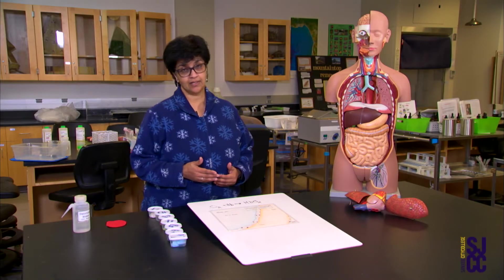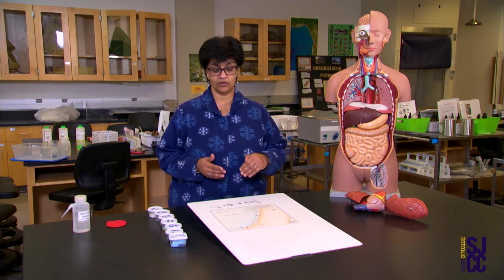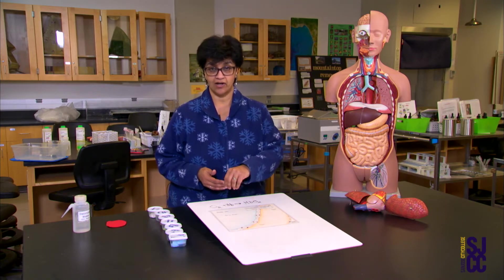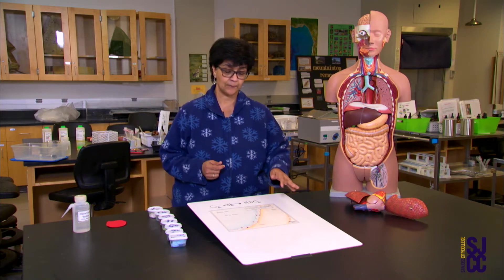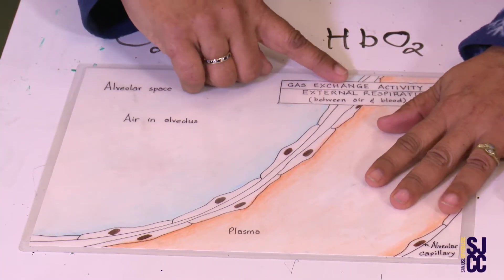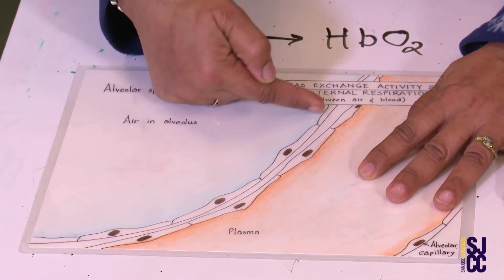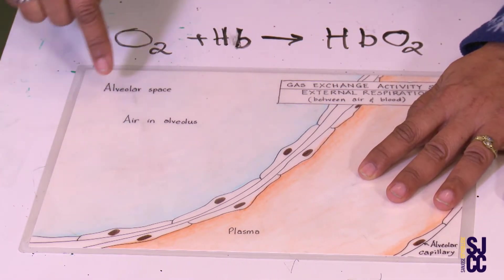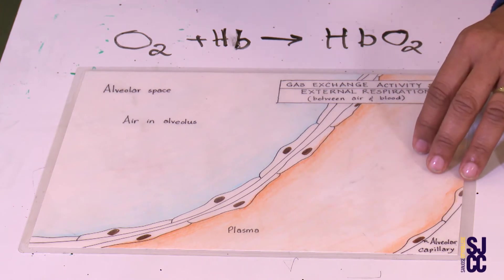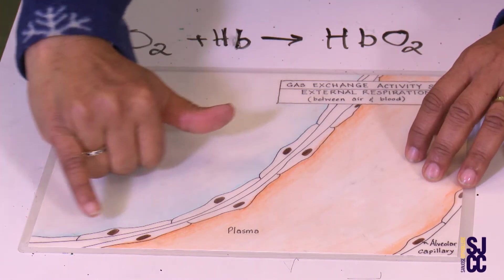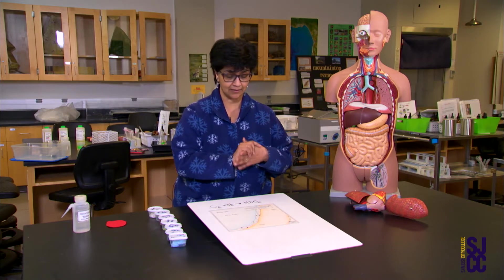We are going to now see how oxygen goes from the air in the lungs into the capillaries. In this picture, this is showing you a little corner of an alveolus — that little balloon I talked about. And these represent the squamous epithelial cells, the really, really flat epithelial cells.